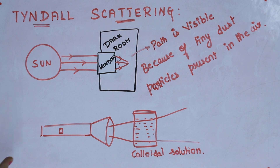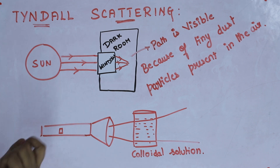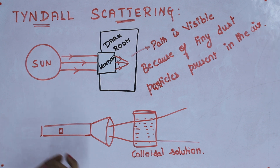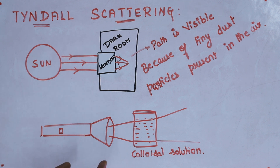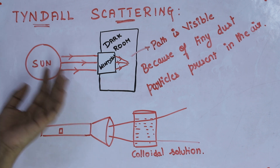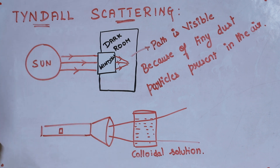A colloidal particle is a small particle with a dimension scale ranging from nanometer to micrometer. I hope you all understood what Tyndall scattering is.